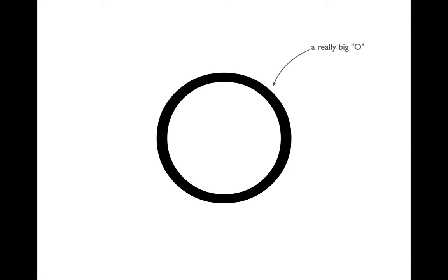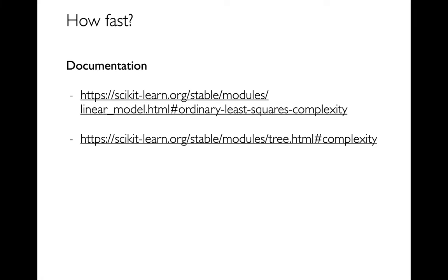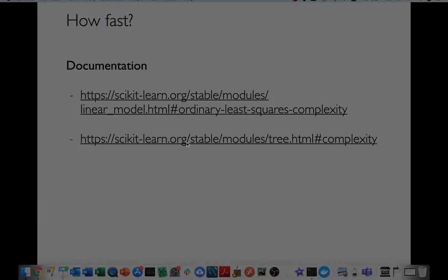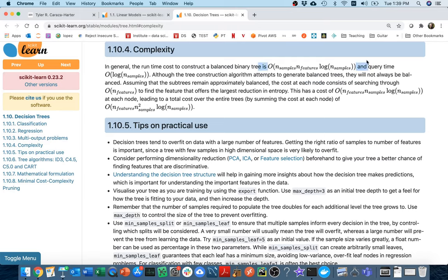We want a mathematical way of categorizing these functions — asking how does the amount of work scale up as the data scales up. This notation is called Big O notation. It's one of the more mathematical things we'll do in this course, but it comes up a lot in practice. For example, later in the semester when we learn about machine learning algorithms, the documentation for those algorithms will often define performance or cost using Big O notation.